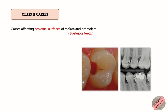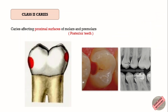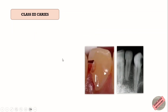Class 2 caries is the caries affecting the proximal surface of premolars and molars — that is, of the posterior teeth. It basically involves the proximal surface, either the mesial surface, distal surface, or both, of the posterior teeth.